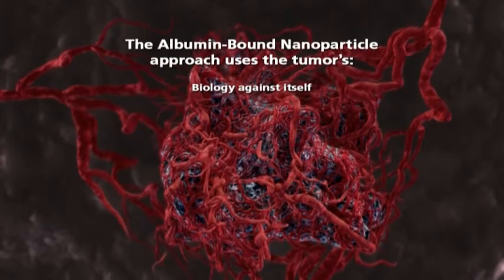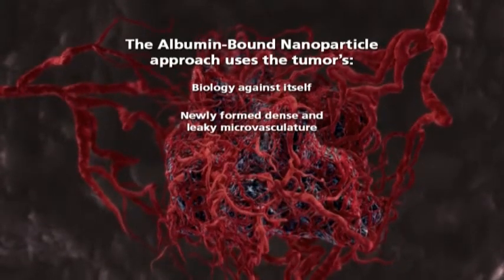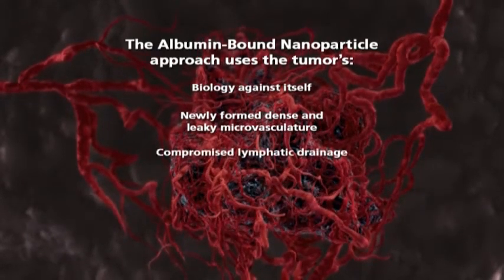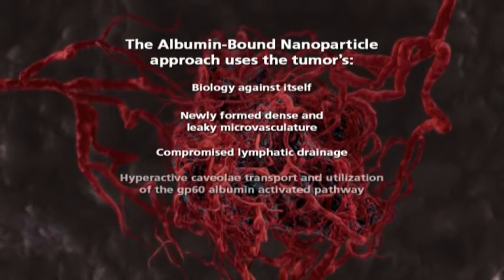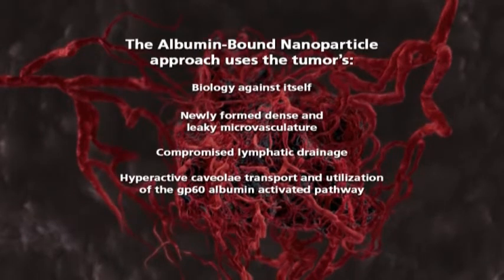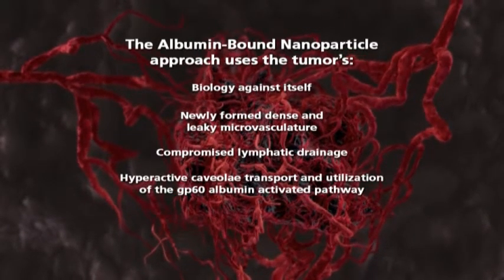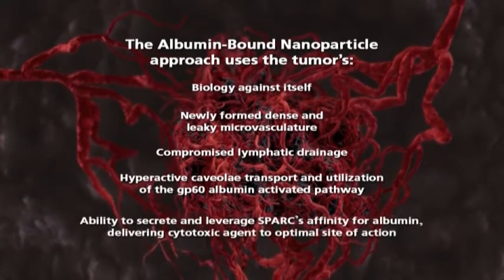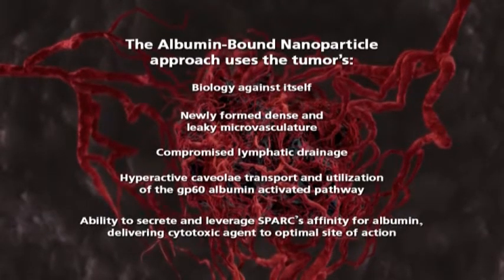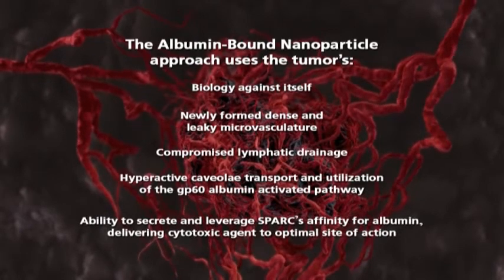This is accomplished by using the tumor's biology against itself: by using its newly formed dense and leaky microvasculature, by using its compromised lymphatic drainage, by using the tumor's overexpression of caveolin-1 to maximize the activity of the albumin-activated GP60 pathway, and finally, by using the tumor's ability to secrete and leverage SPARC's affinity for albumin, delivering cytotoxic agent to its optimal site of action.